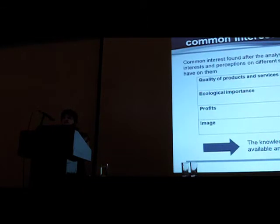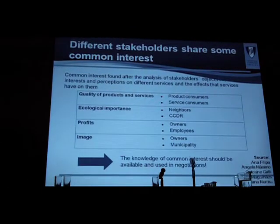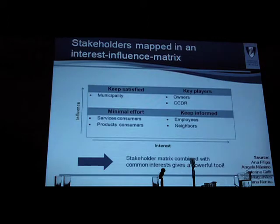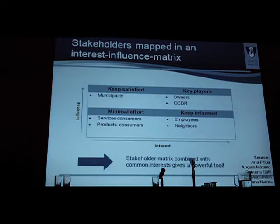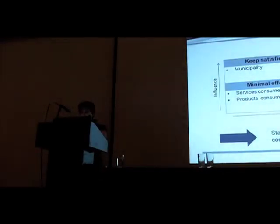We have identified shared interests between different stakeholders in relation to the same ecosystem services, which is very relevant in a way to create lobby groups in support of different ecosystem services. We have classified the different stakeholders in terms of who are the key players, who are those that need to be kept satisfied or kept informed, or those that have minimum effort in relation to a particular ecosystem. If you wish, an interest influence matrix.